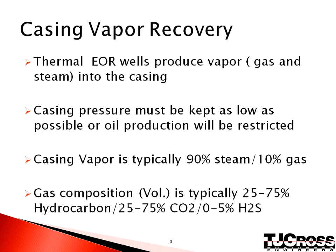In thermal enhanced oil recovery, hot steam is injected into wells to heat the reservoir and displace oil and water towards the producing wells. These wells will produce vapor into the casing, which consists of the associated gas from the reservoir and the condensing steam. Casing vapor is typically 90% steam and 10% gas. A good practice is to vent this casing vapor to a low pressure system so that we do not place back pressure on production.